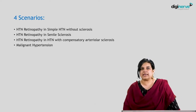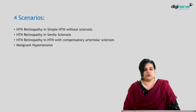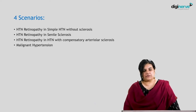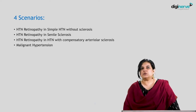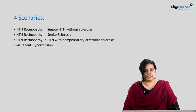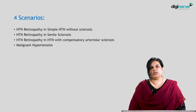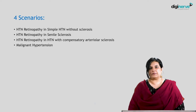Four scenarios can occur in which hypertensive retinopathy can progress. First, hypertensive retinopathy in simple hypertension without sclerosis, commonly seen in young individuals where antihypertensive medications prevent sclerotic changes. Second, hypertensive retinopathy in senile sclerosis, seen in elderly patients with a constant smoldering process damaging blood vessels. Third, hypertensive retinopathy with compensatory arteriolar sclerosis, also in young individuals usually with renal involvement. Fourth, malignant or accelerated hypertension requiring urgent attention, whose hallmark is disc edema.